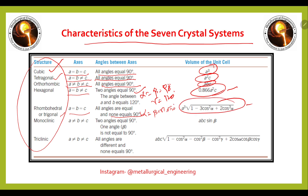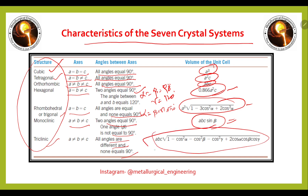Monoclinic: a ≠ b ≠ c, two angles are equal to 90 degrees, one angle is not equal to 90 degrees, and the volume of the unit cell is a·b·c·sin(beta). Triclinic: a ≠ b ≠ c, all angles are different and none equal to 90 degrees — this is the volume of the unit cell for this one.